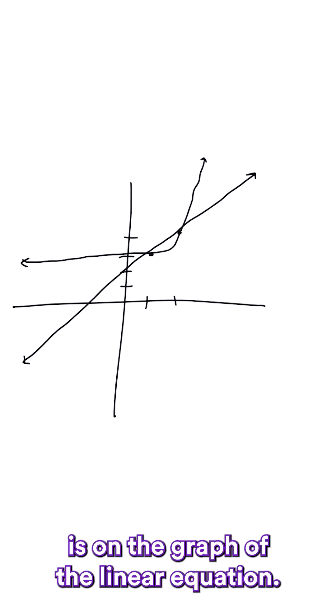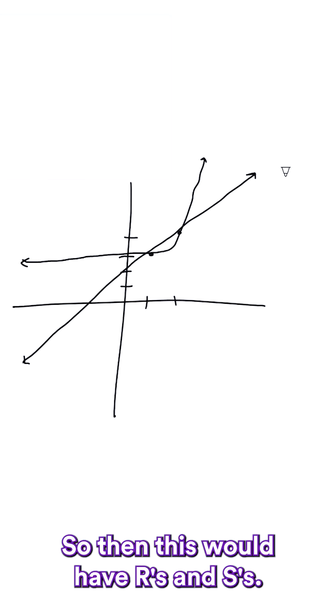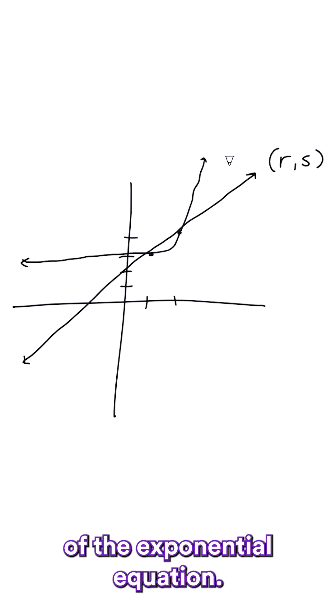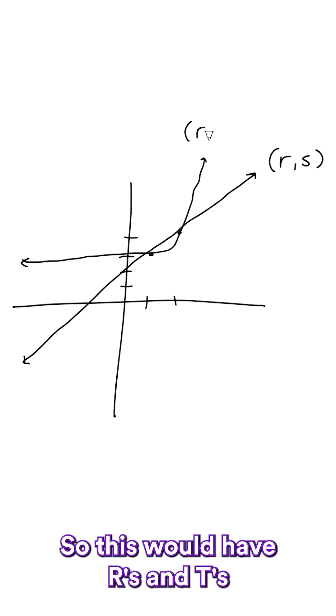Now it says the point (r,s) is on the graph of the linear equation. So then this would have r's and s's. And then it says (r,t) is on the graph of the exponential equation. So this would have r's and t's.